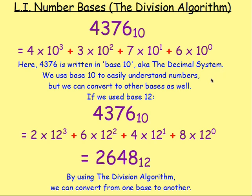What we can do is change from one base to another. So if we wrote 4,376 base 10 in base 12, we would end up with this number here — 2, 6, 4, 8. What that would mean is you would have an 8 times 12 to the power of 0, a 4 times 12 to the power of 1, a 6 times 12 to the power of 2, and a 2 times 12 to the power of 3. But it's not obvious how you get that.